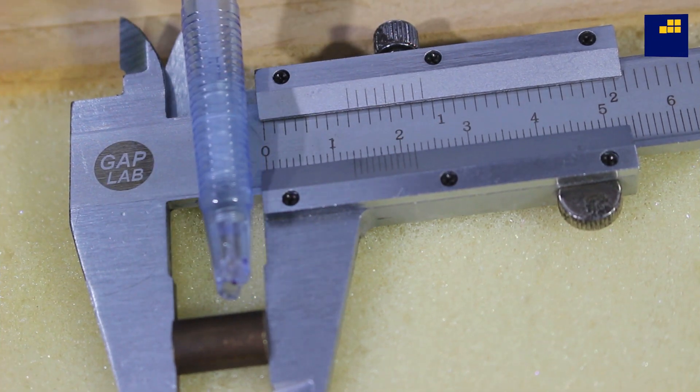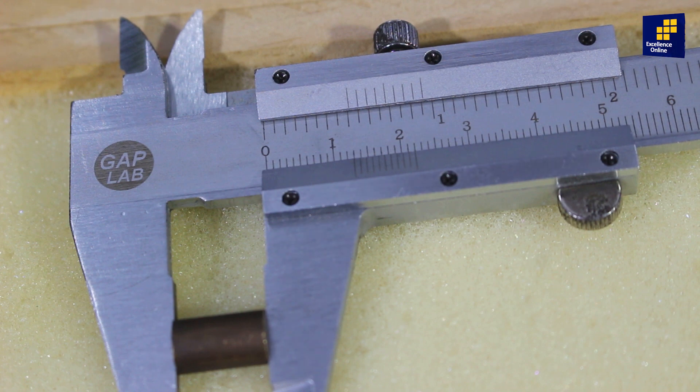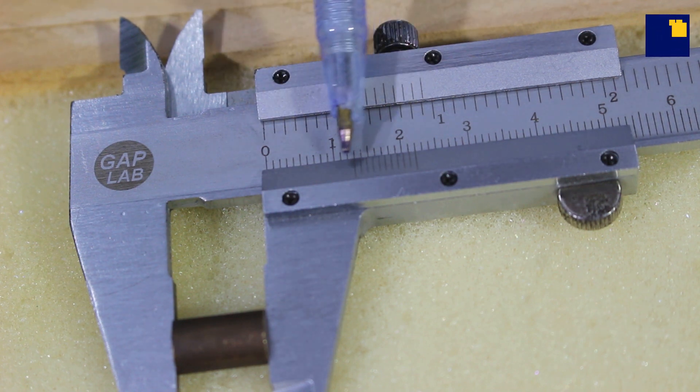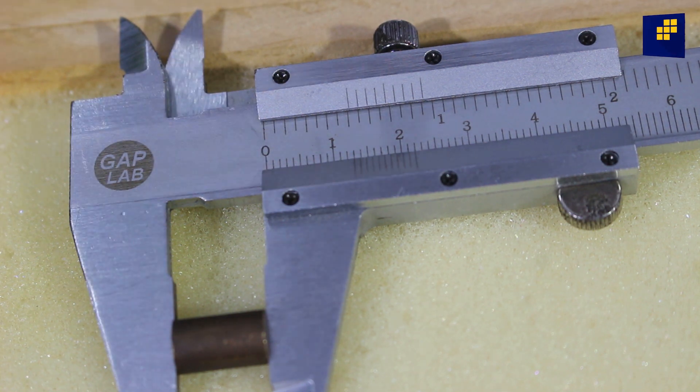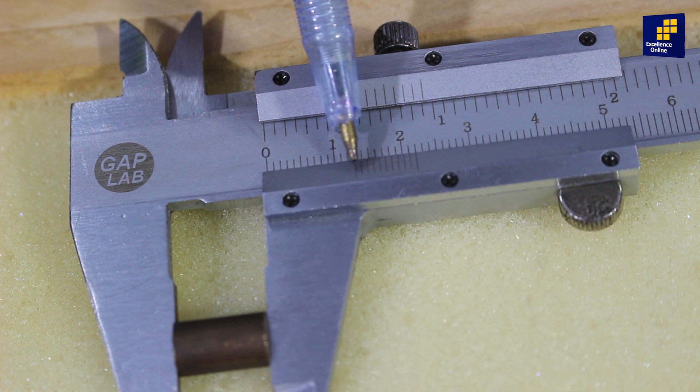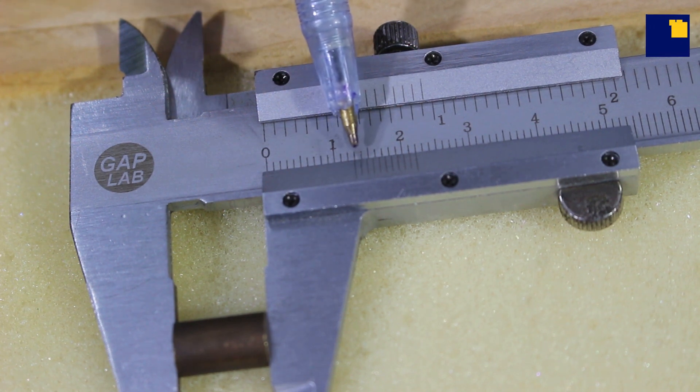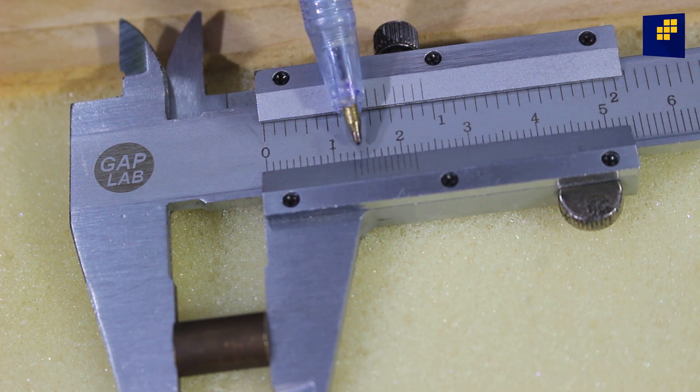इस solid cylinder की length find out करने के लिए हमने cylinder को lower jaws के बीच में place कर दिया. अब यहाँ दो scales की हमने reading पढ़नी है, main scale and vernier scale. Main scale reading के लिए हम देखेंगे which division of main scale either coincides with the zero of vernier scale or it is just left to the zero of the vernier scale.